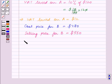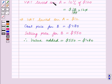Therefore, value added equals selling price for B, that is $550, minus cost price for B, which is $480. And this equals $70.